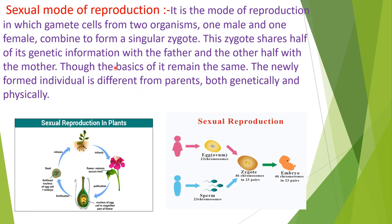Sexual reproduction is the mode of reproduction in which gamete cells from two organisms — one male and one female — combine to form a single zygote. The male germ cell is called sperm and the female germ cell is known as egg or ovum. Both have half the number of chromosomes, and when they combine, they form a single cell called the zygote. The zygote then undergoes mitosis division to form an embryo, which develops into a fetus, and the fetus creates a new individual.